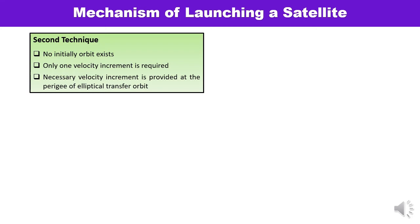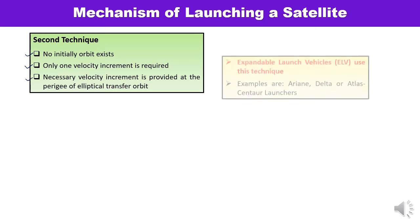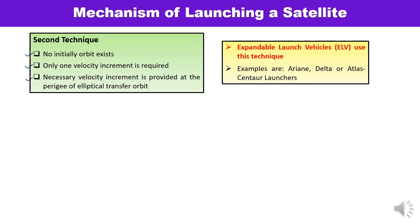The second technique is commonly used by expendable launch vehicles like Ariane, Delta, and Atlas. Here there is no initial circular orbit — no initial orbit exists. The vehicle provides the necessary velocity at the perigee of the elliptical transfer orbit. This means only one velocity increment is required, and it is provided at the perigee.